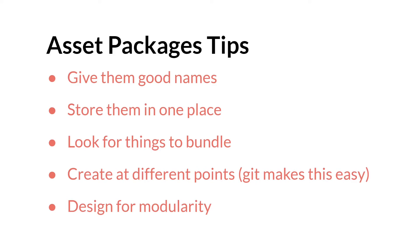If you've been following along with the Git tutorial, Git makes this really easy because you can just check out different versions. So even after you've created everything, you can say, okay, what I did two weeks ago was actually the simpler version that I'd normally want to use. You can simply revert to that, save out the asset package, and then go back to your main branch.